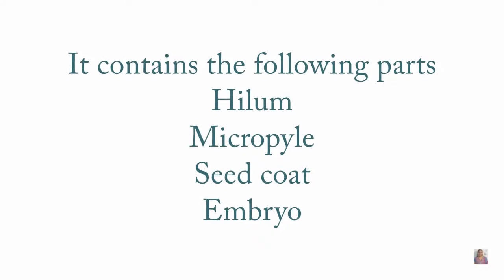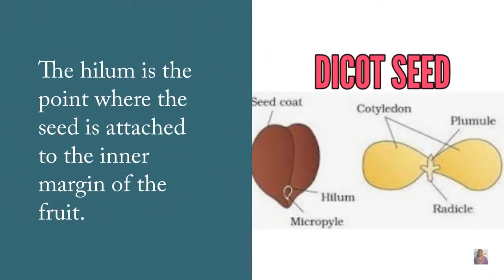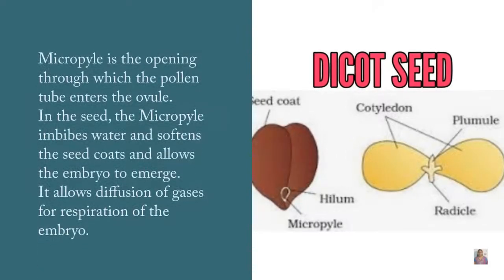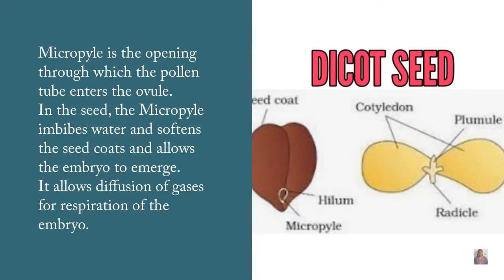A dicot seed contains the following parts: hilum, micropyle, seed coat, and the embryo. The hilum is the point where the seed is attached to the inner margin of the fruit. The micropyle is the opening through which the pollen tube enters the ovule. In the seed, the micropyle imbibes water and softens the seed coat, allowing the embryo to emerge.